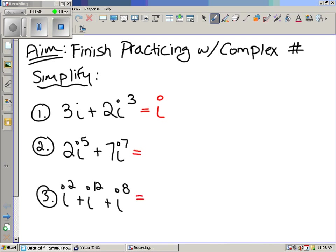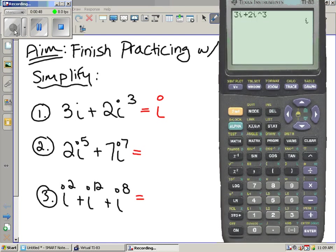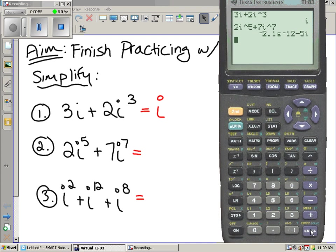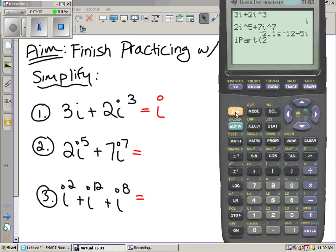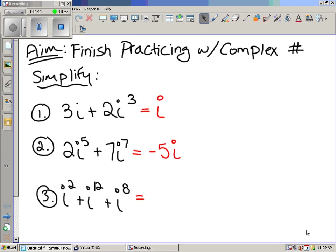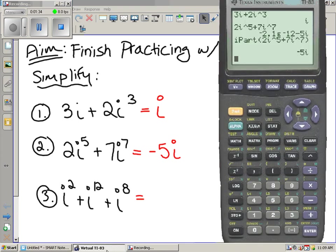Has anybody tried to do the second one yet? In the second example, we type it in, right? Two I raised to the fifth plus seven I raised to the seventh. Okay, and you hit enter, you get a mistake. How do you fix that problem? You go to math, you go over to num. What do we pick over here? I part. Exactly, I part.